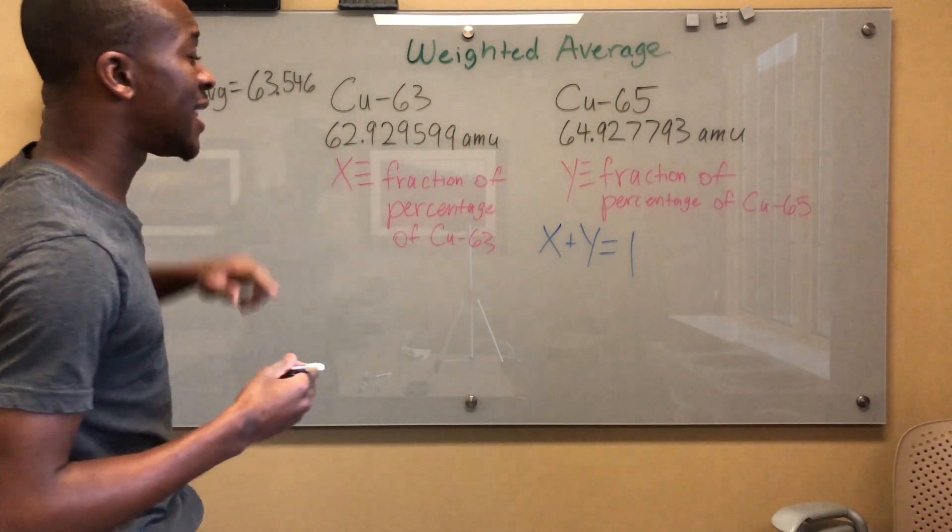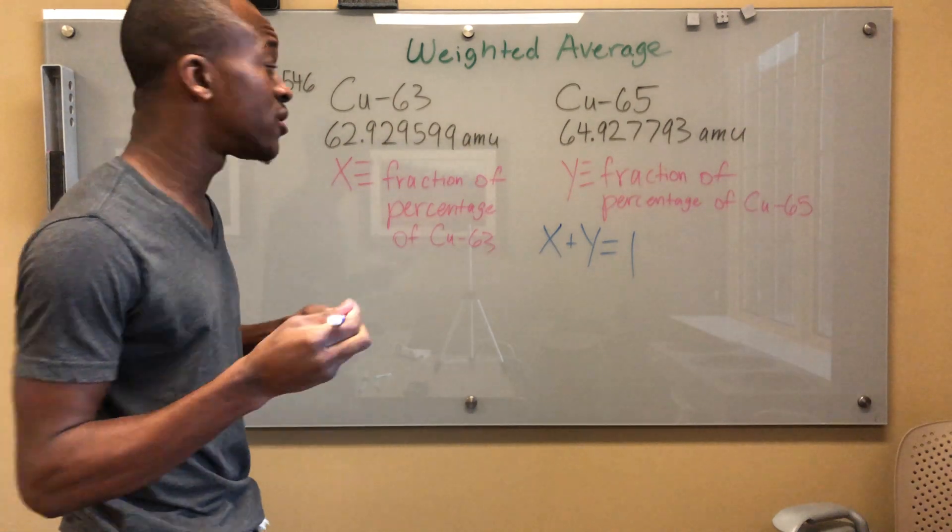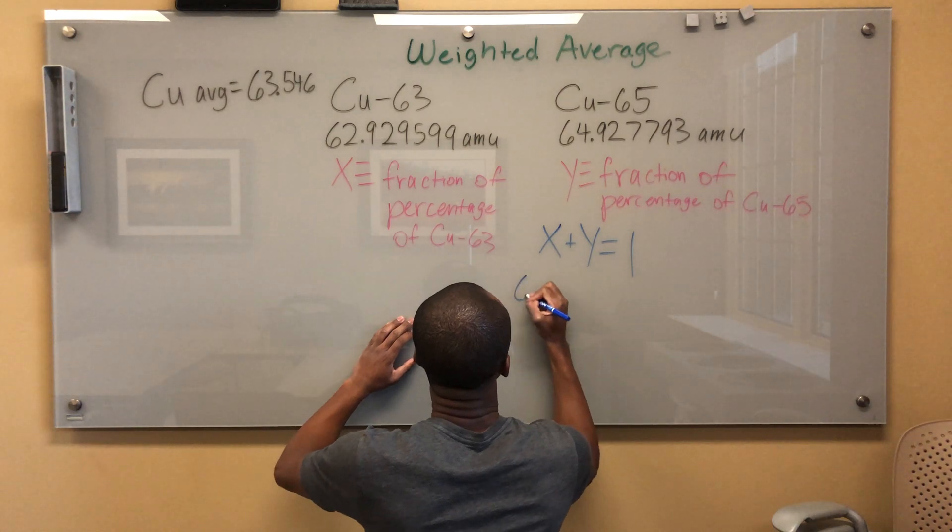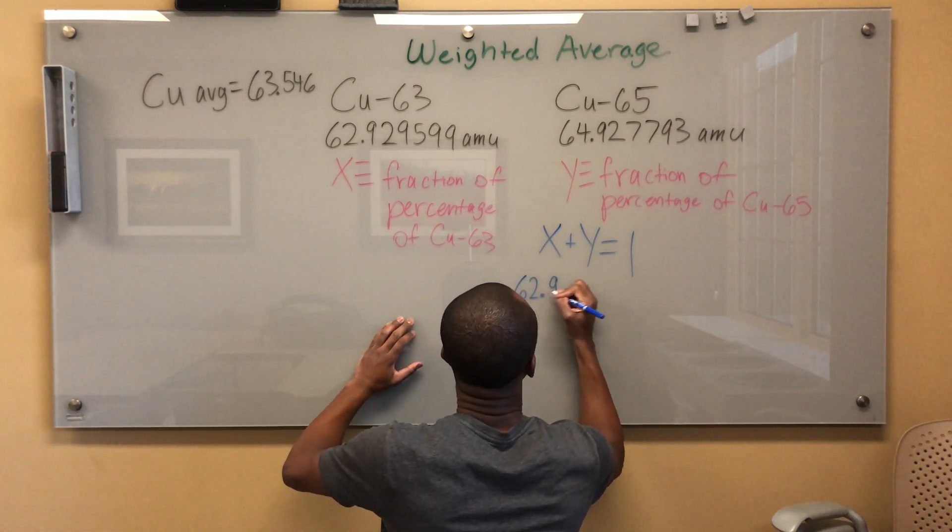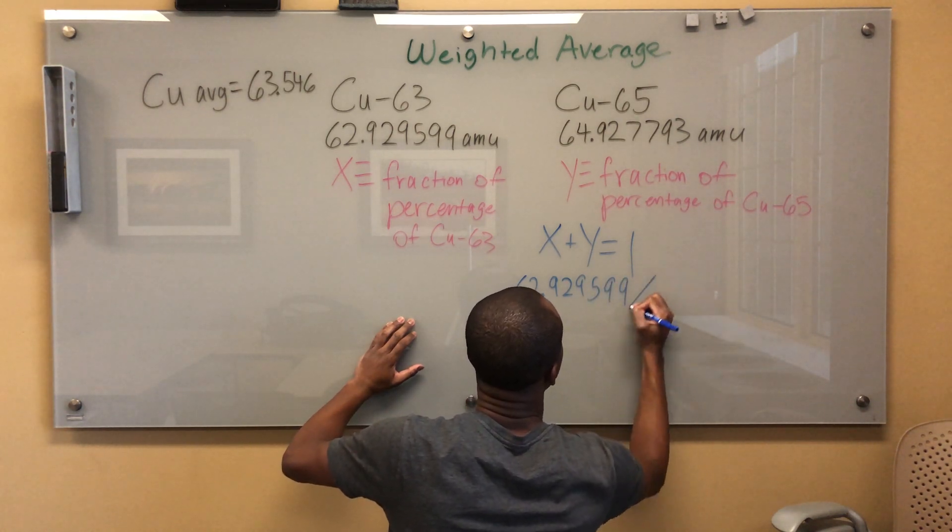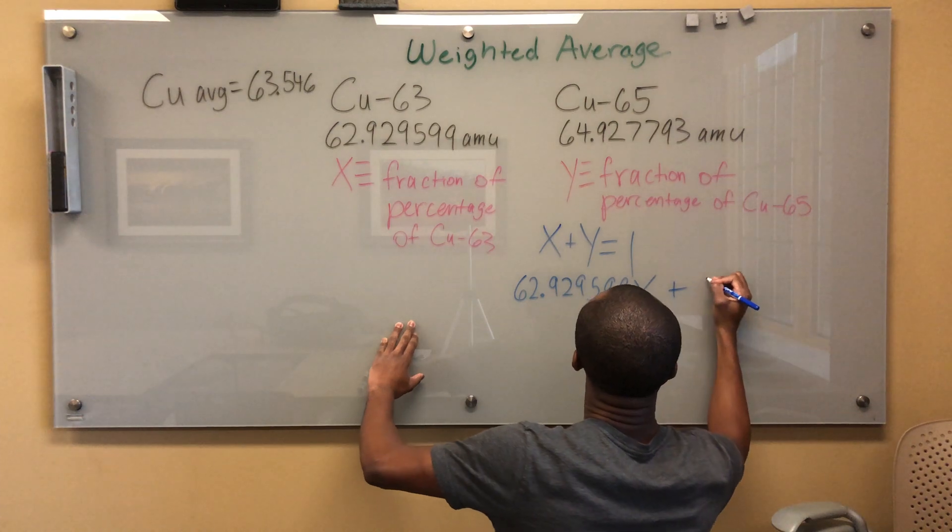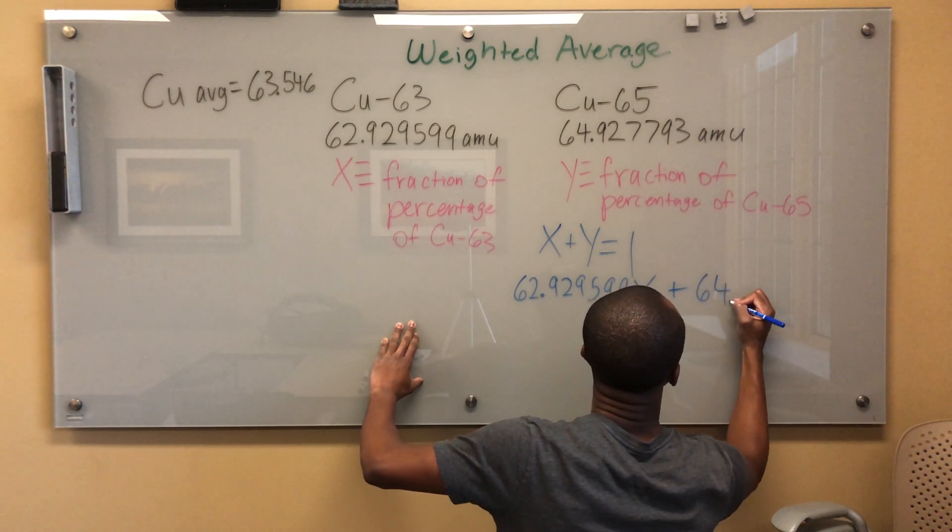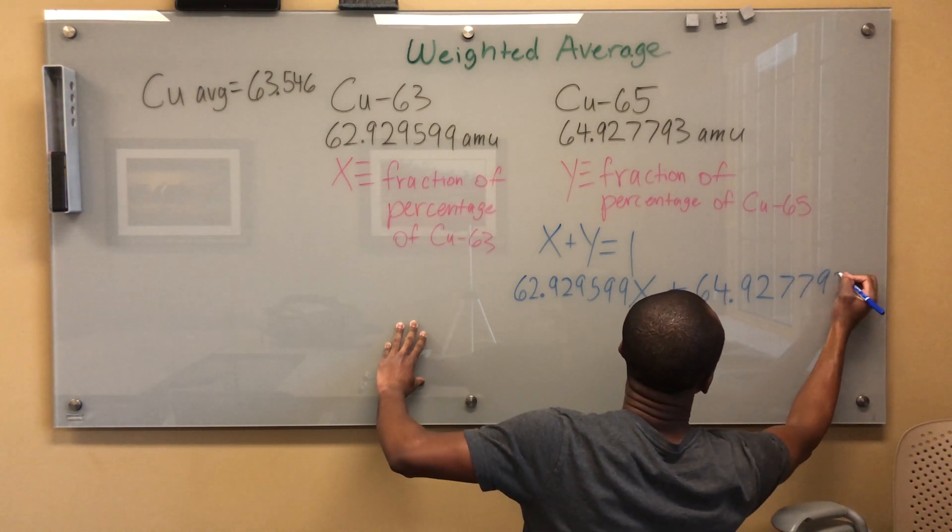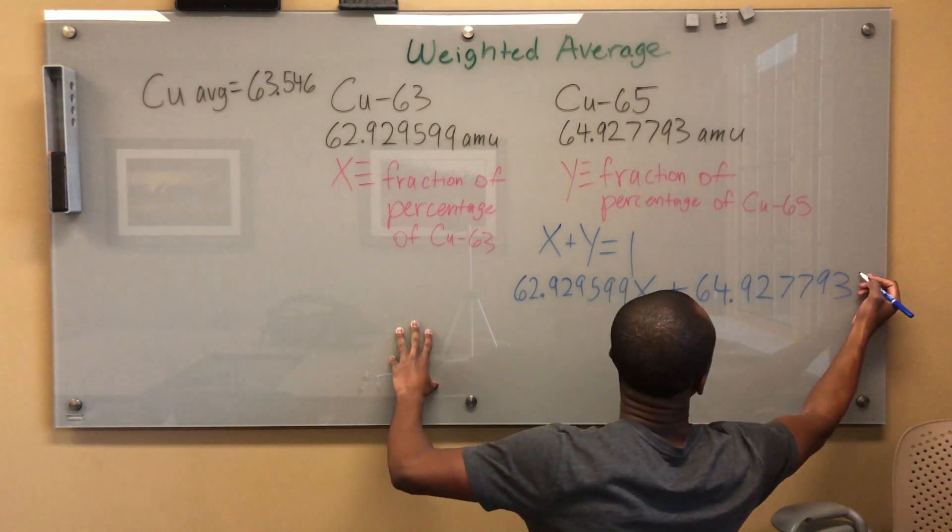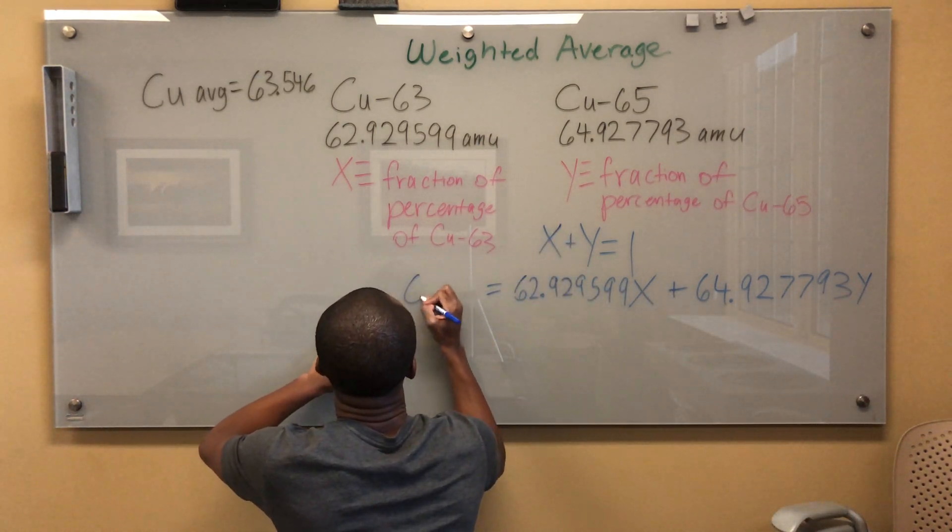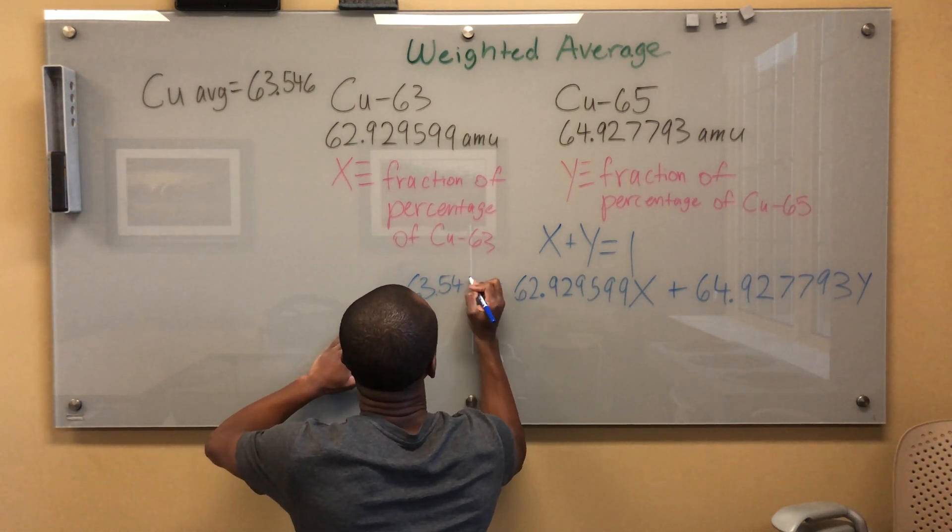Now, they've also given me a weighted average. I can use that to set up another equation. So I'm going to say 62.929599X plus 64.927793Y is equal to my weighted average, 63.546.